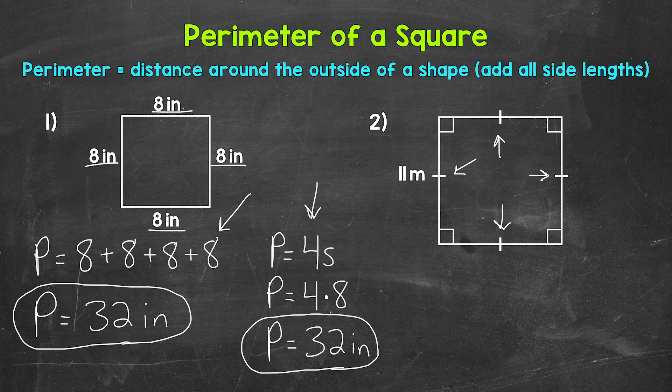They are all 11 meters. We also have right angle symbols — 90 degree angle symbols. I wanted to include all of these symbols in case you come across them, so that you will know what they mean.